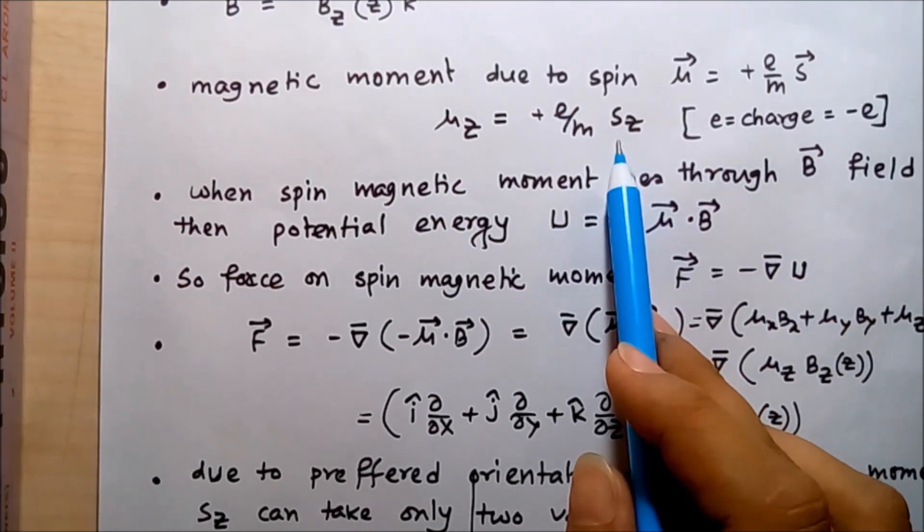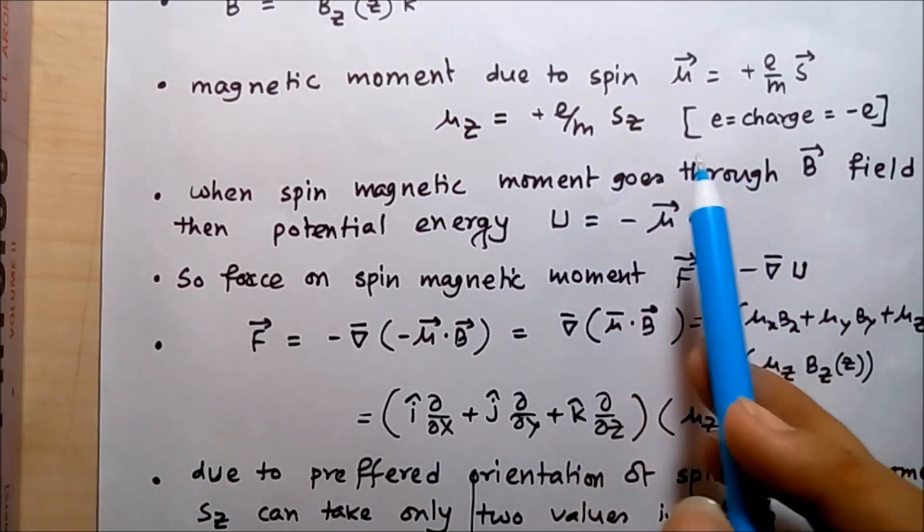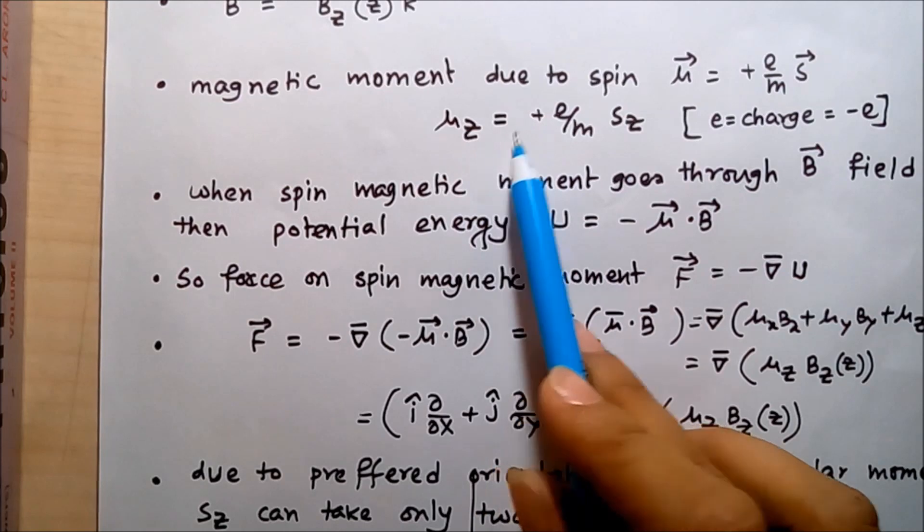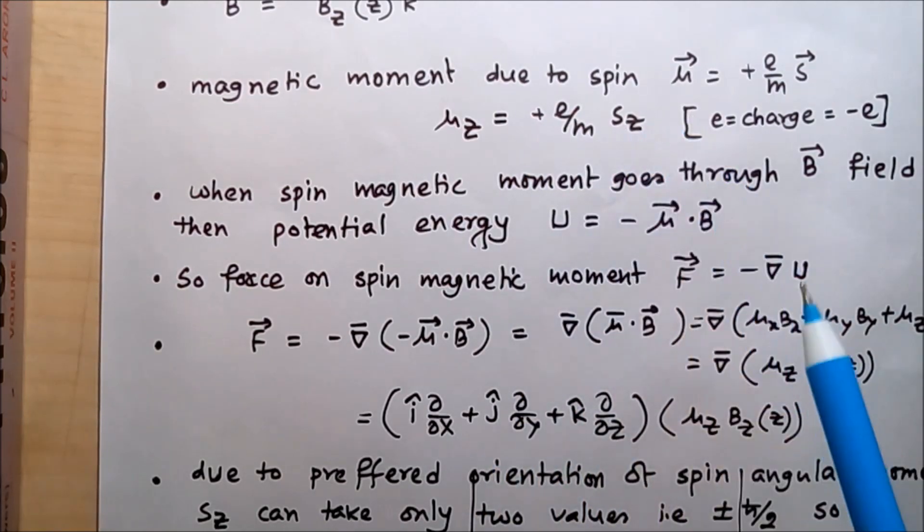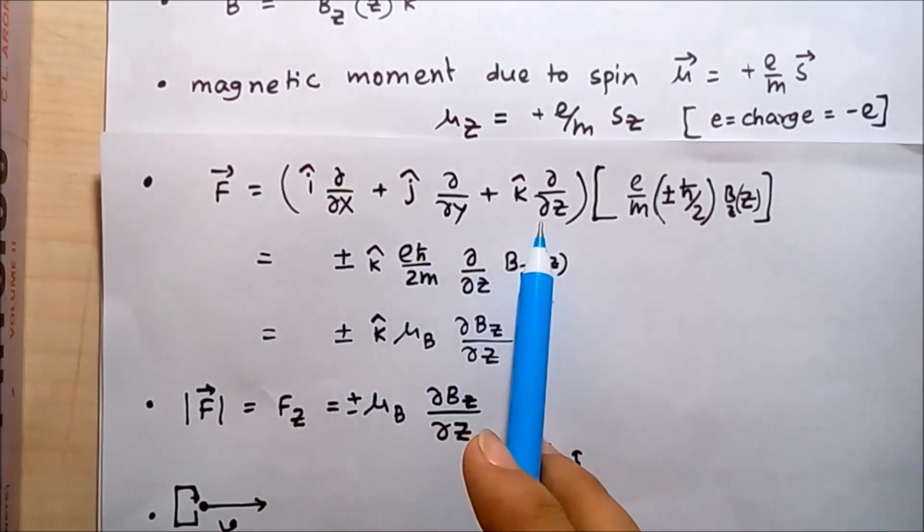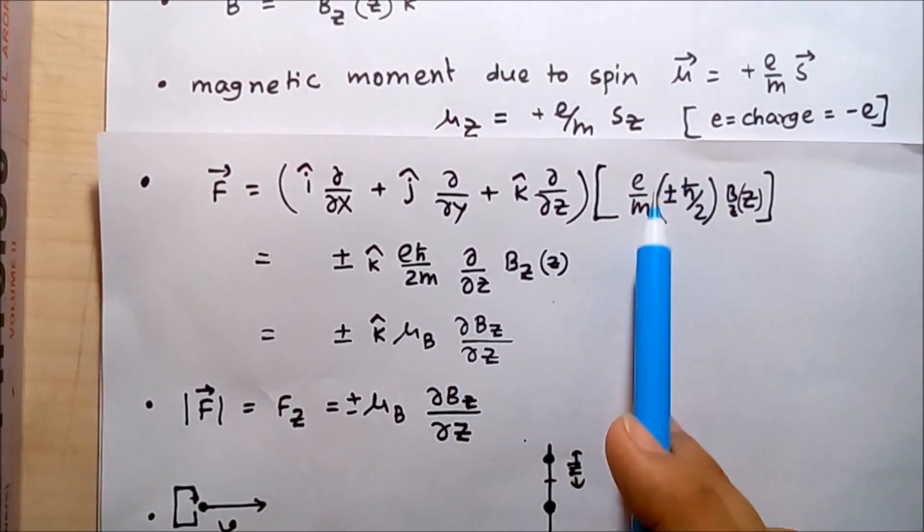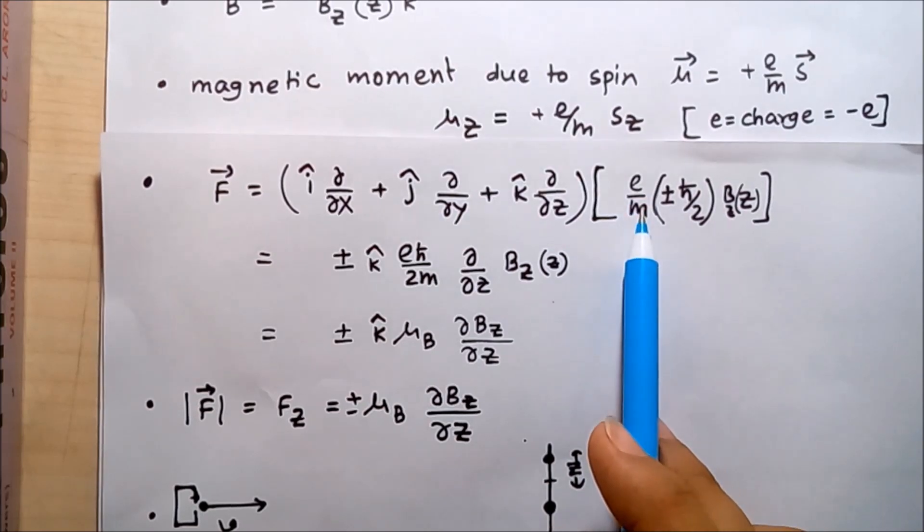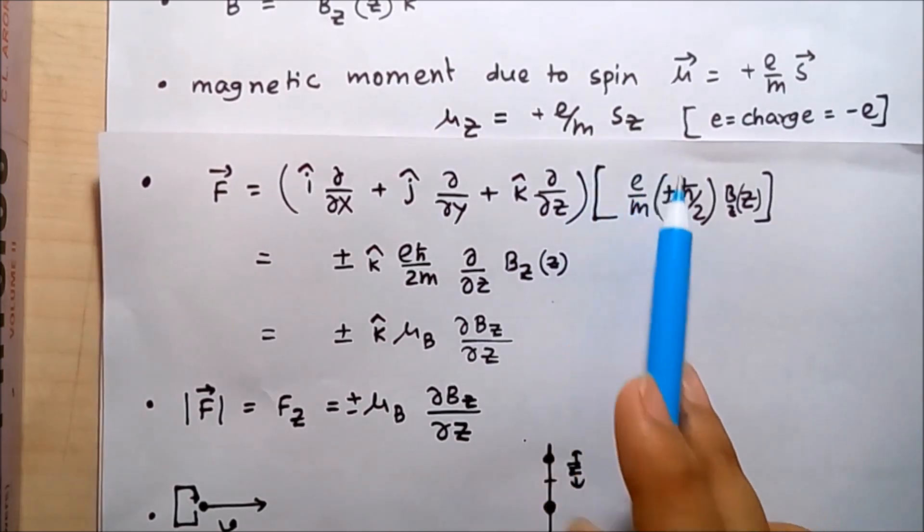So S_Z has a value plus or minus h-bar by two depending on the direction, and mu_Z equals e by m times plus minus h-bar by two. Force equals gradient operator times mu_Z. Mu_Z is written as e by m times S_Z, that is plus minus h-bar by two times B_Z.